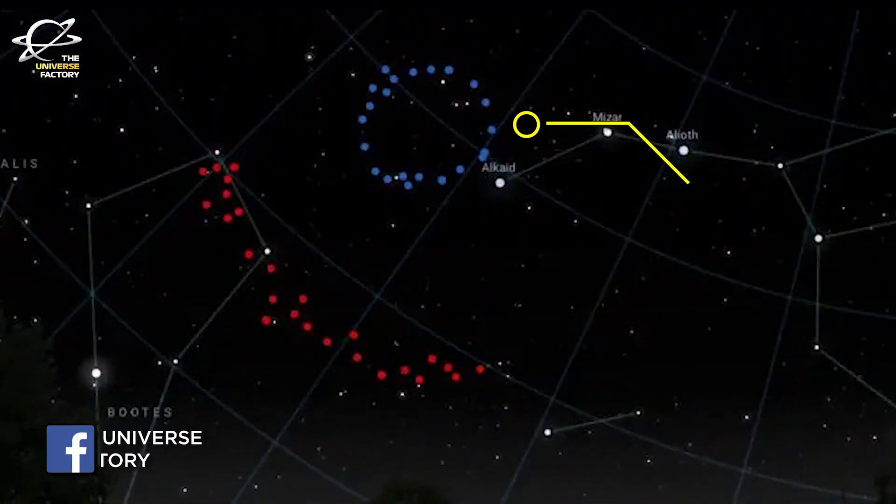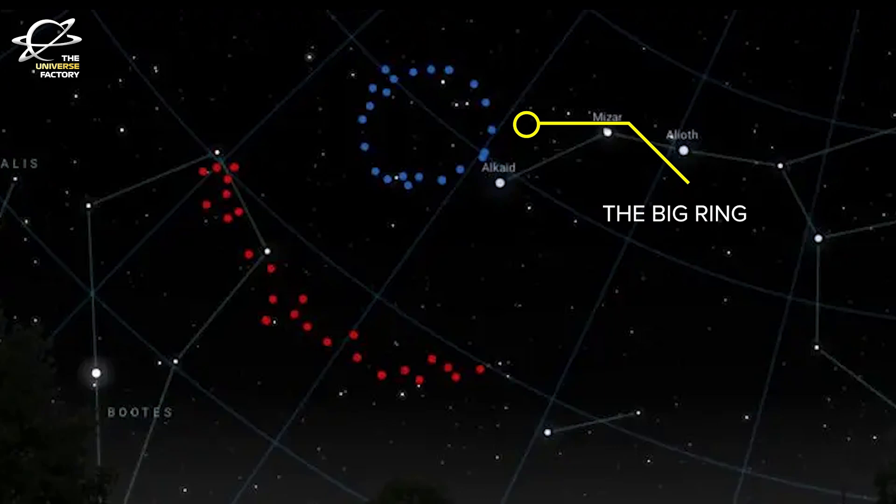This ultra-large superstructure is a big ring in the sky that is about 9.2 billion light years away from the Earth.